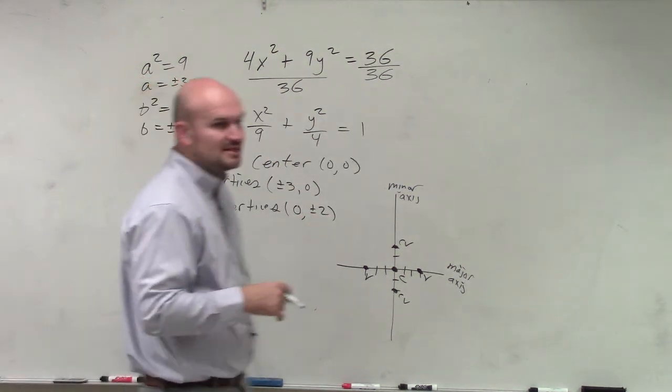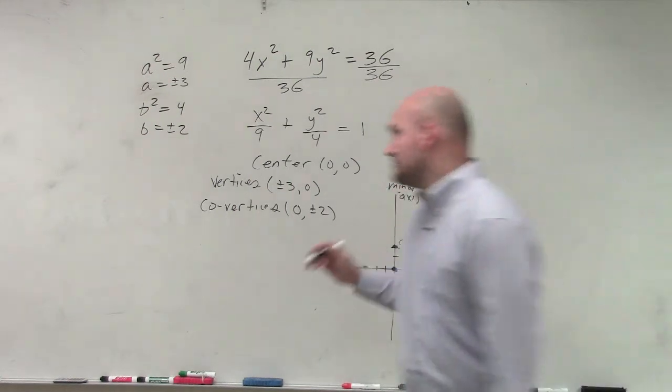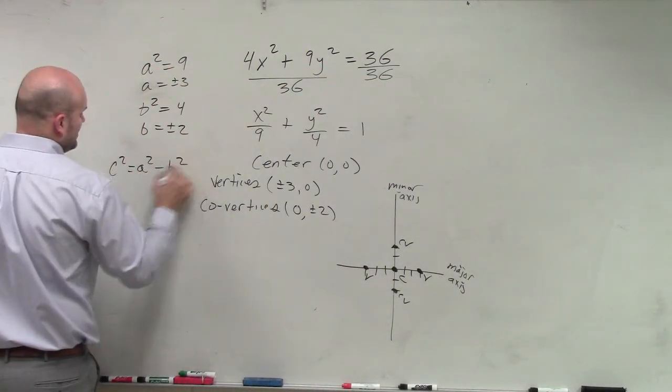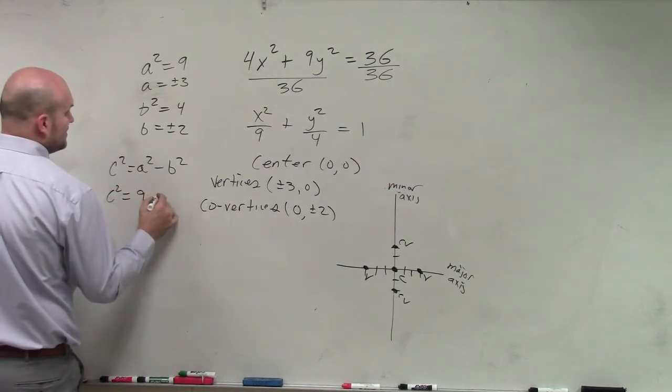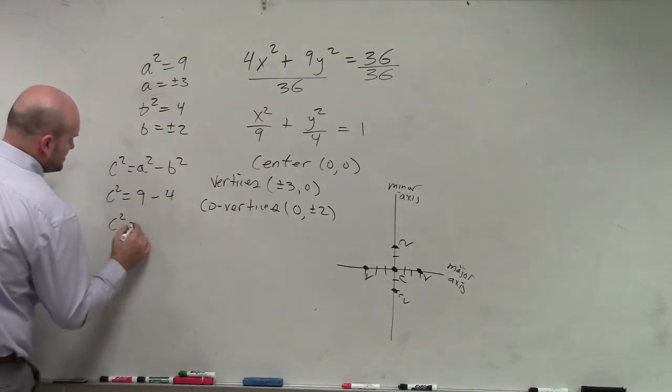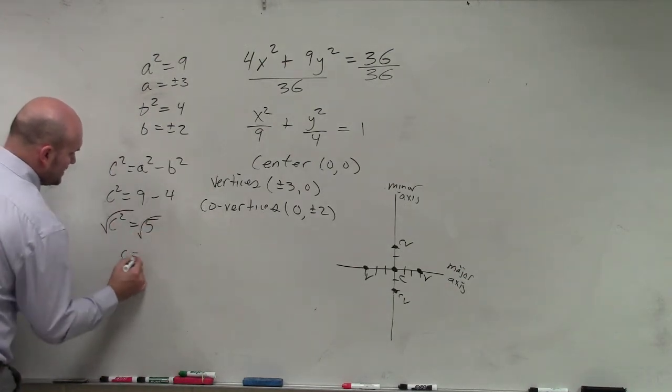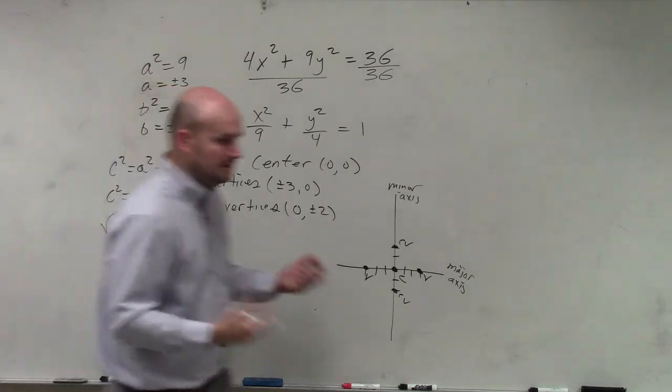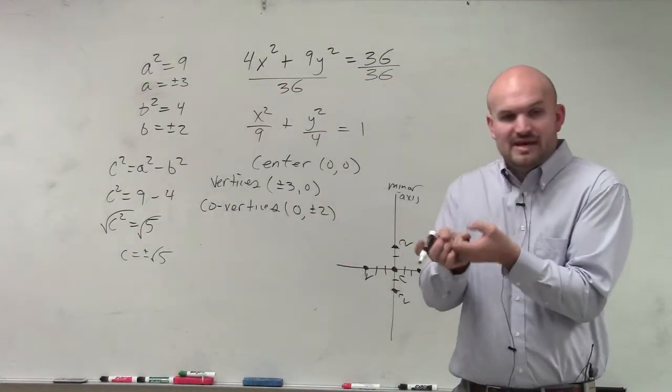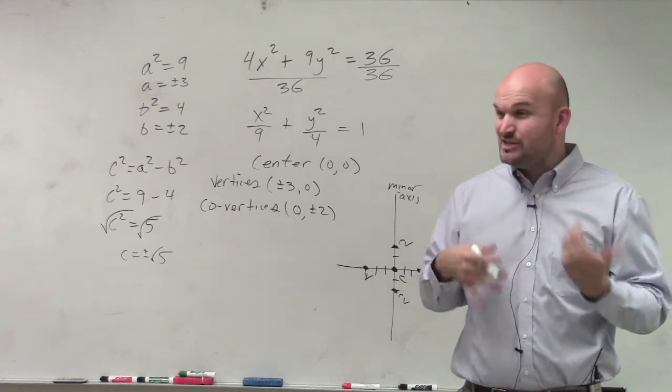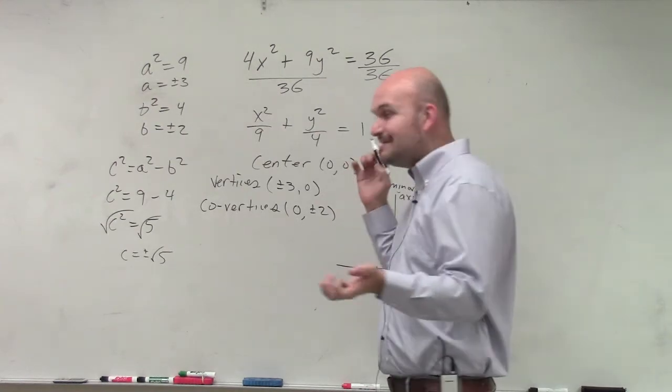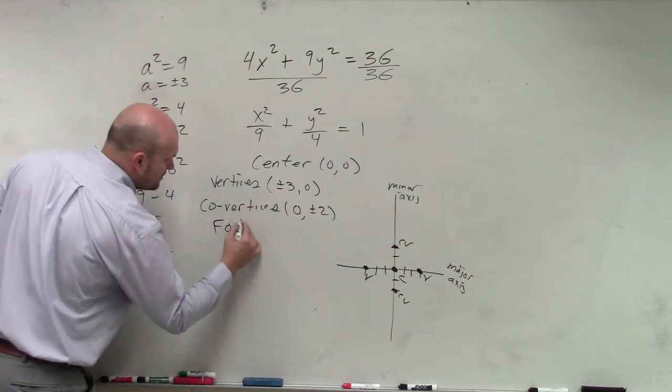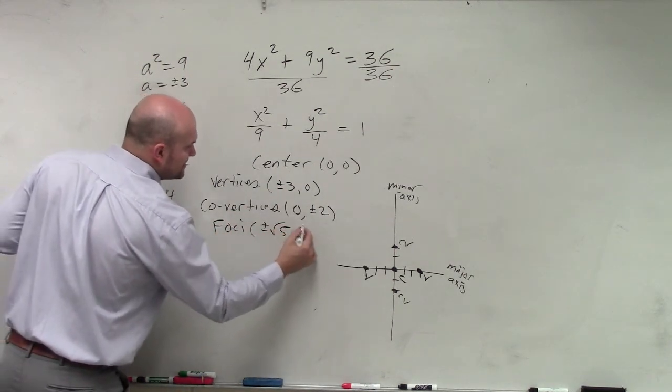And then last but not least, guys, we need to find our foci. And our foci is a value of c, which we know that c squared equals a squared minus b squared. c squared equals 9 minus 4. c squared equals 5. Square root both sides, c equals plus or minus the square root of 5. Now, here's where, again, knowing the major axis is so important. Because the foci lie on the major or the minor axis? Major axis, right? So they have to be going left and right. That means your foci are going to be plus or minus the square root of 5 comma 0.